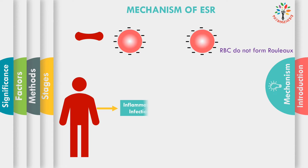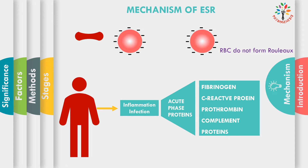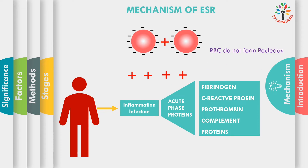In a person with inflammation or infection, the body will produce immunoglobulins and some acute phase proteins like fibrinogen, C-reactive protein (CRP), prothrombin, etc. These proteins have a positive charge and can effectively neutralize the charges of RBCs, which then allows for the formation of rouleaux.